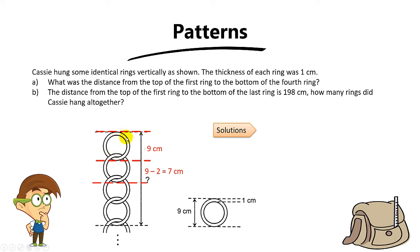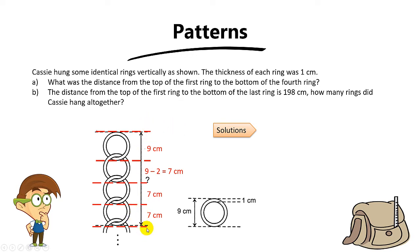Every time the ring extends, the extension is basically only 7cm, because the overlap is 2cm. The first ring is 9cm. The second ring will extend the total length by 7cm. The third ring will also extend the length by 7cm, and the fourth ring will also extend the length by 7cm. So the total length for part A is 9 plus 3 times 7.